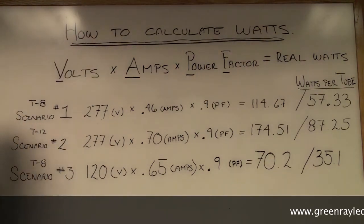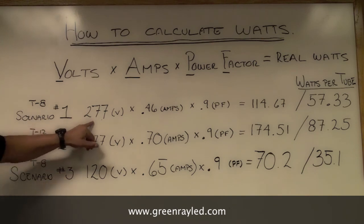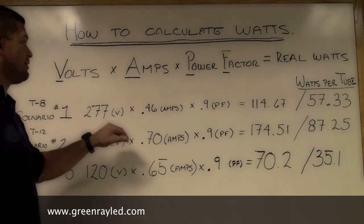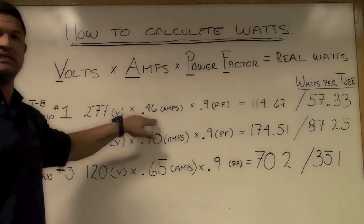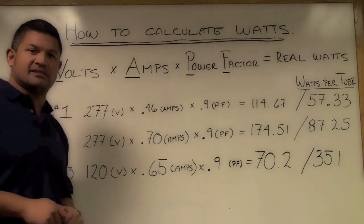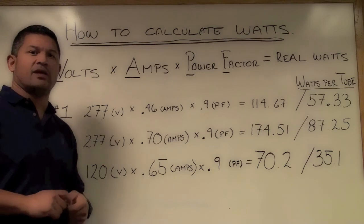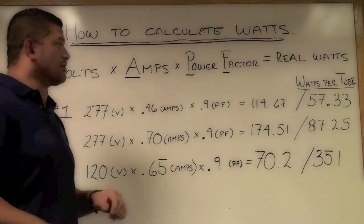Currently in the first scenario is what we have here in the office. We have a 277 T8 U shape in the unit. Our actual amps on the units are 0.46. This you can find on the ballast itself. Take a look at that and we can help with the calculation or you can give us a call.